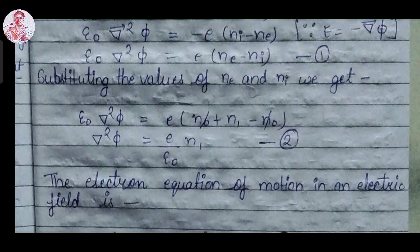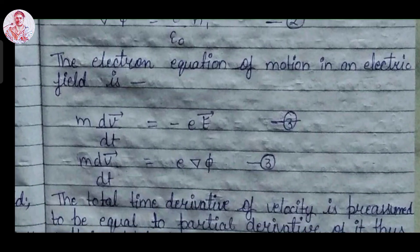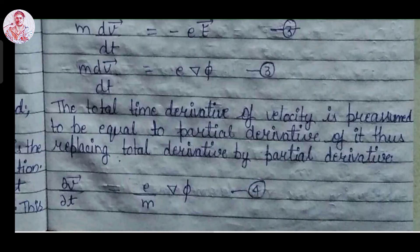The electron equation of motion in the electric field is written as m (del V / del t) = -e E. This is equation 3. Substituting the electric field E as the negative gradient of potential, and replacing the total time derivative with the partial derivative, we get del V / del t = (e / m) del phi. This is equation 4.